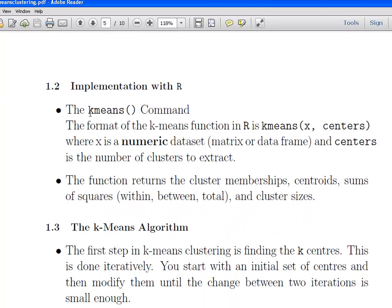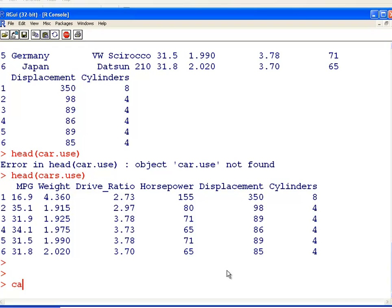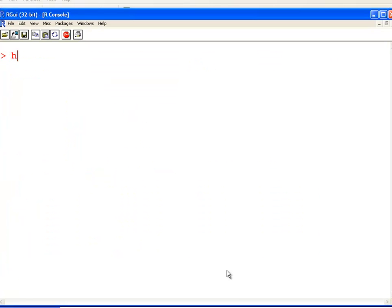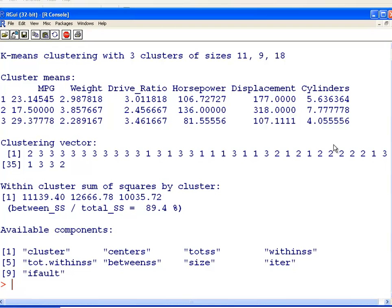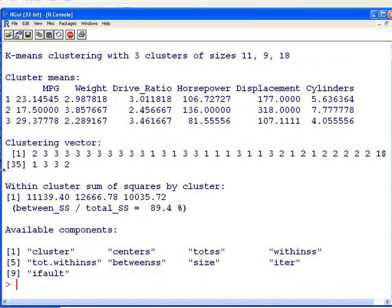So, implementation with R, it's the k-means command. What we do here is, k-means, x is the name of the data set, or the numeric data set. So, cars.use is what we're going to use. And centers is the number of clusters to extract. So, let's try this out. k-means, cars.use, and three clusters. That's actually the solution. It's just slightly gone off screen, so I'll just tuck it in a bit. K-means clustering solution with three clusters of size 11, 9, and 18.